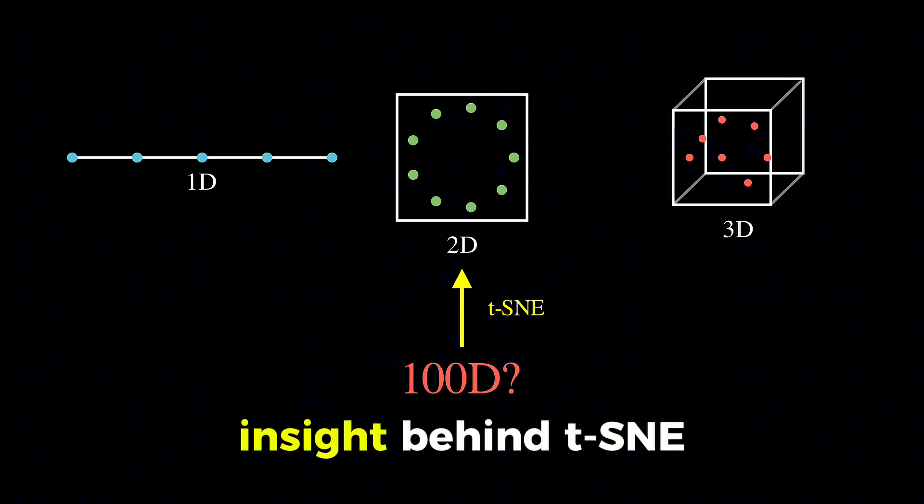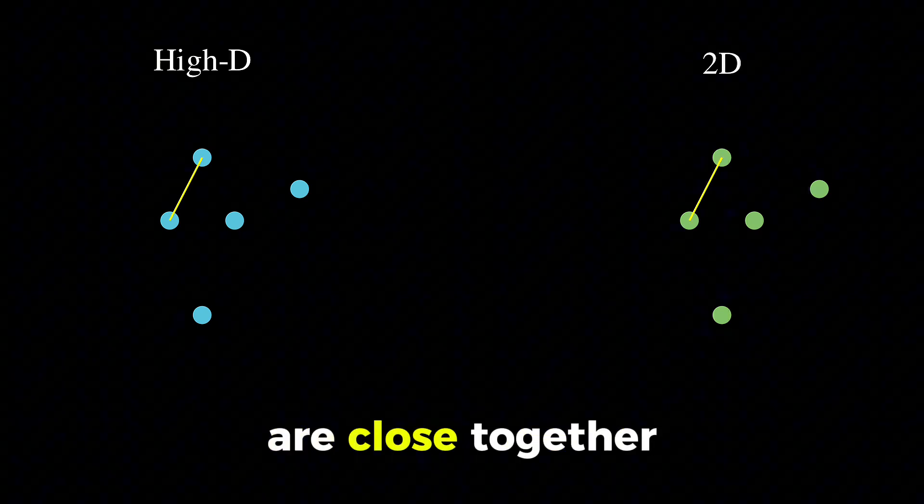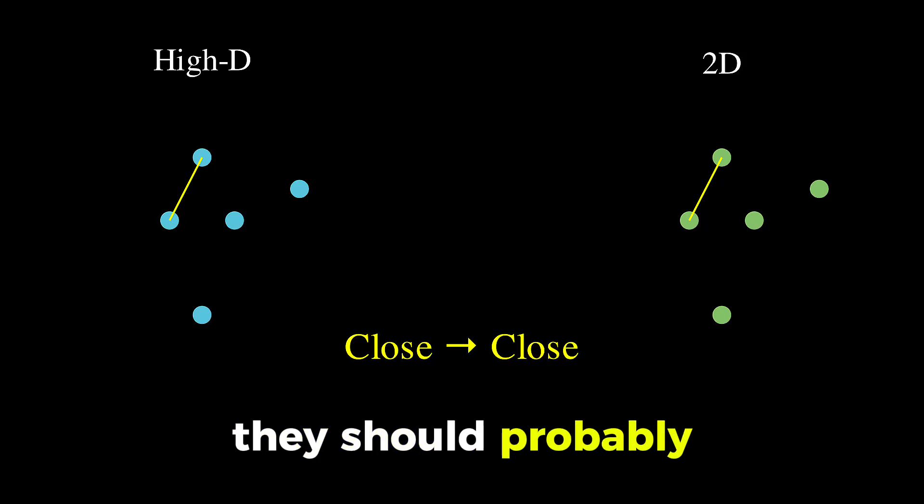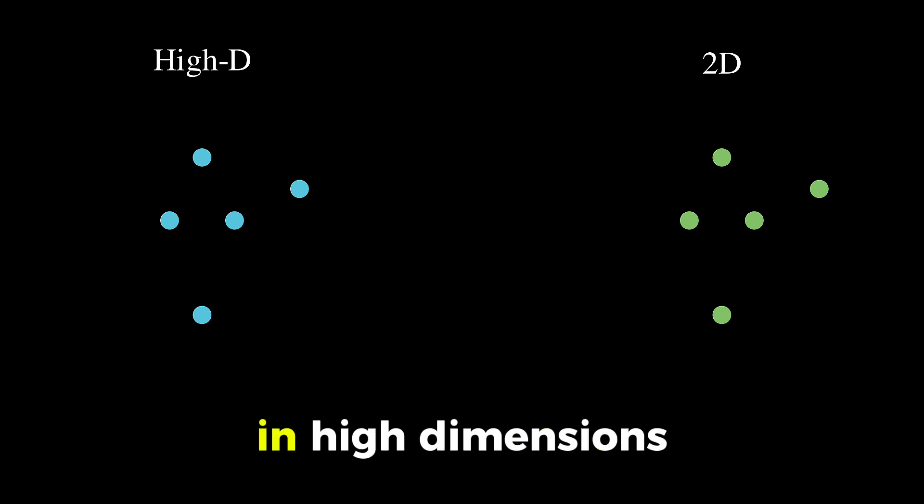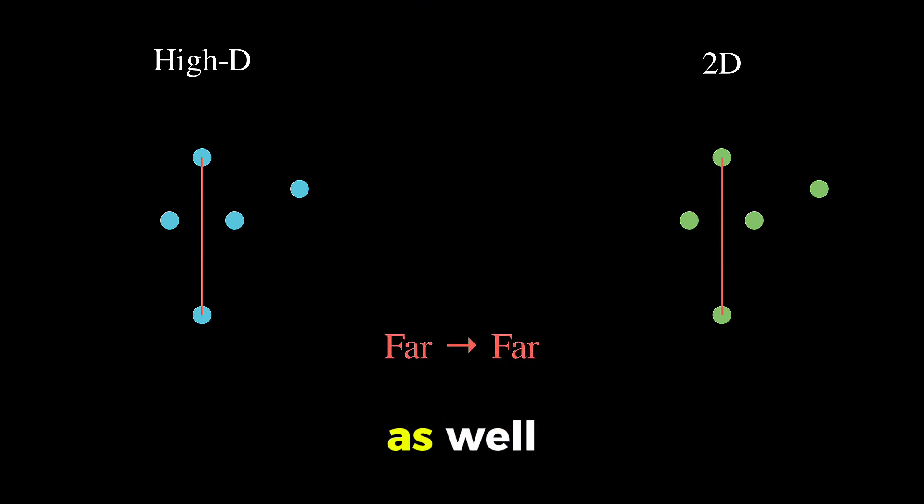Now, the key insight behind t-SNE is that when we are reducing dimensions, we want to preserve the relationships between points. If two points are close together in high-dimensional space, they should probably be close together in our 2D visualization too. And if they are far apart in high dimensions, we'd like them to be far apart in 2D as well.